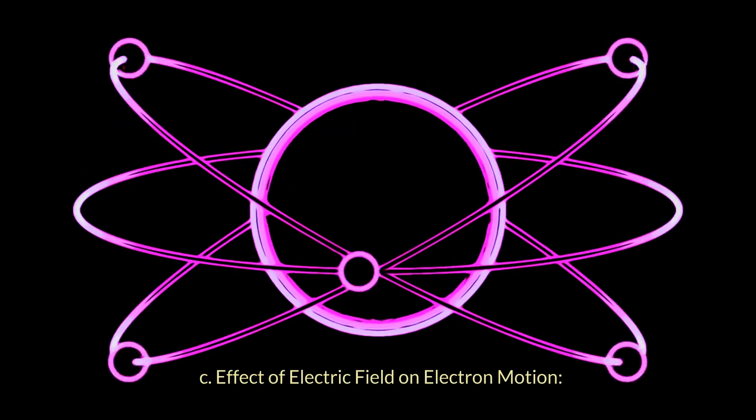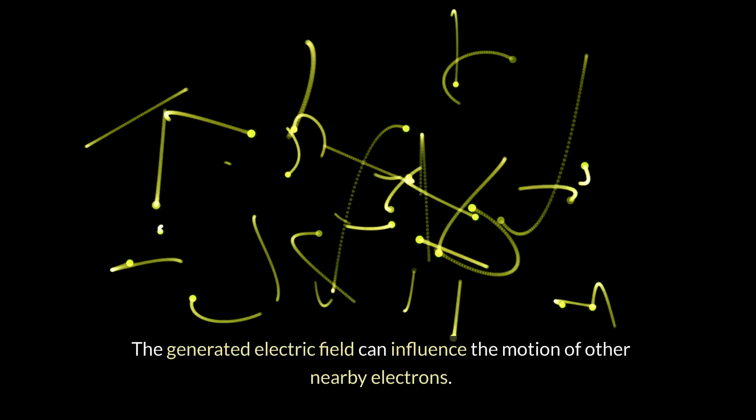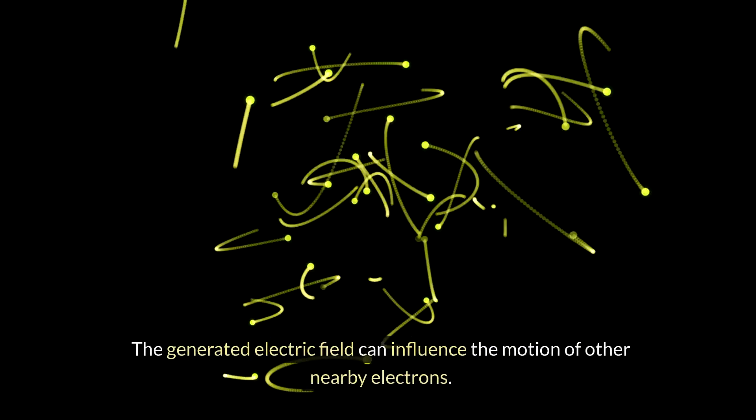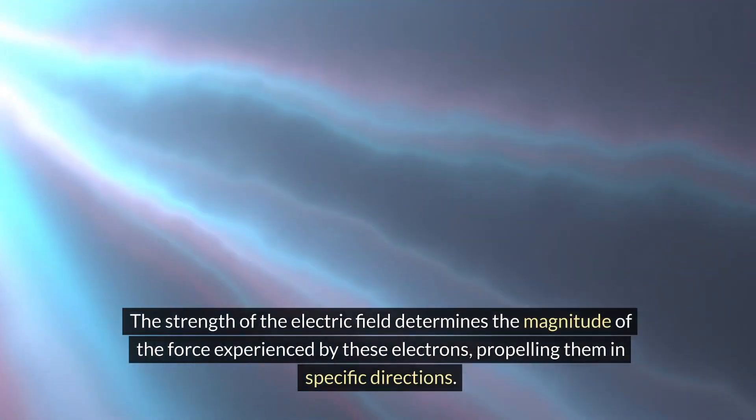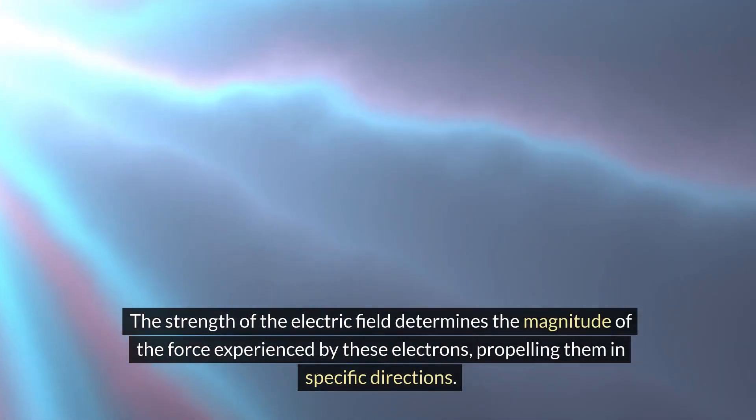Effect of electric field on electron motion: The generated electric field can influence the motion of other nearby electrons. The strength of the electric field determines the magnitude of the force experienced by these electrons, propelling them in specific directions.